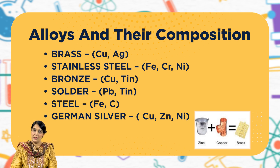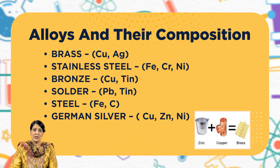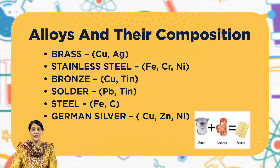Let me share with you the compositions of different alloys. Brass is a mixture of copper and silver. Stainless steel is a mixture of iron, chromium, and nickel. Bronze is a mixture of copper and tin. Solder is a combination of lead and tin. Steel is a mixture of iron and the non-metal carbon. Lastly, German silver is a mixture of copper, zinc, and nickel.